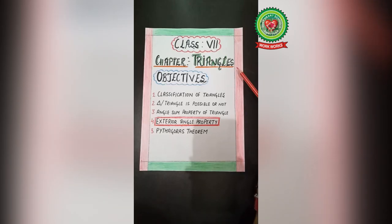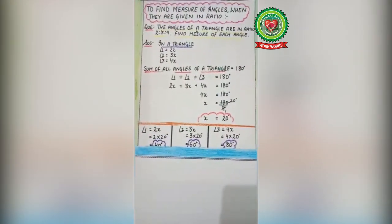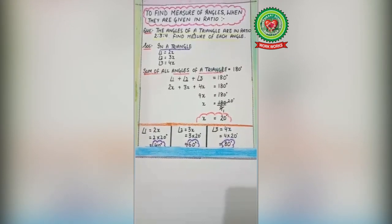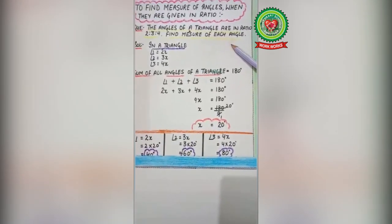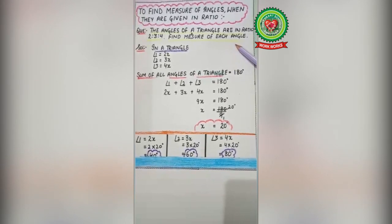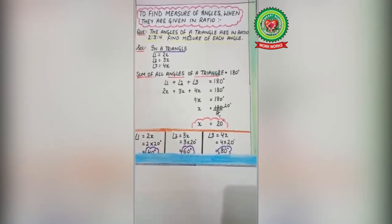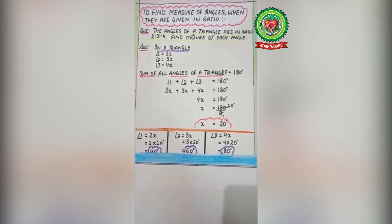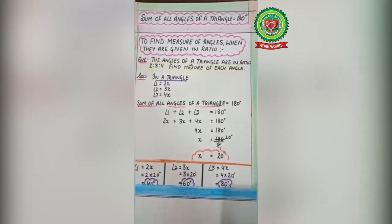Dear students, in this chapter on triangles, we have already learned about classification of triangles and whether a triangle is possible or not. We have also done some related questions on that property. Today our new topic is how to find the measure of angles when they are given in ratios. Now let's move to the question: read the statement — the angles of a triangle are in the ratio 2:3:4, find the measure of each angle.